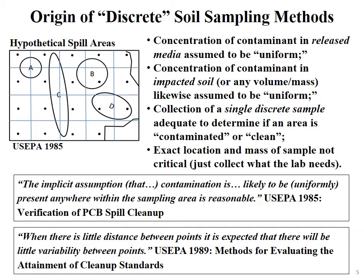I worked quite a bit with Dina Crumling at US EPA headquarters, who provided original documents from the 1980s and 1990s published by US EPA on the origin of discrete soil sampling methods. We wondered why this method — essentially testing soil one spoonful at a time — was developed in the first place. Looking at the original documents, there are two key quotes. From 1985 PCB spill cleanup guidance, the implicit assumption was that 'contamination is likely to be uniformly present anywhere within the sampling area.' From 1989 methods for evaluating attainment of cleanup standards: 'when there is little distance between points, there will be little variability between points.' When writing this guidance, no one had ever gone into the field to test these assumptions.